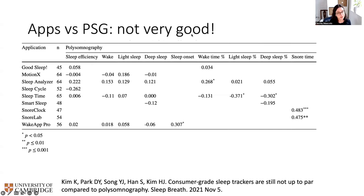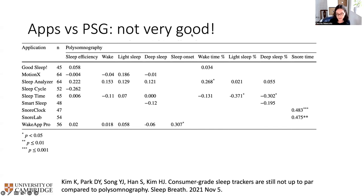Some of these apps actually use audio — I think Sleep Cycle in particular might use some audio — and some others possibly just consider how often you use the phone. Sleep efficiency is the ratio between the total sleep time over the in-bed time, so it tells you how much of the time you spend in bed you're actually sleeping. Wake, light sleep, deep sleep, sleep onset, wake time percentages — all these values are essentially correlations. Zero is no correlation, and these values are quite low, so the correlation coefficients are not very significant. In general, this figure means that the apps are not quite so precise.